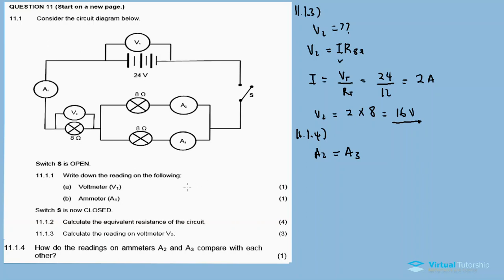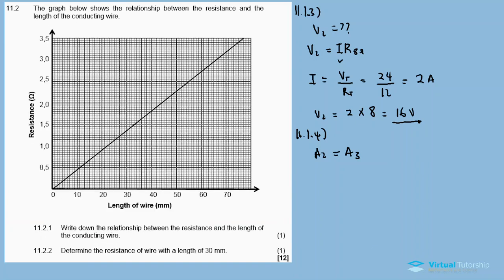11.2: The graph below shows the relationship between the resistance and the length of the conducting wire. Resistance is on the y-axis and length of wire in millimeters is on the x-axis. This is a direct proportion relationship - as we increase the wire length, the resistance of the wire increases.